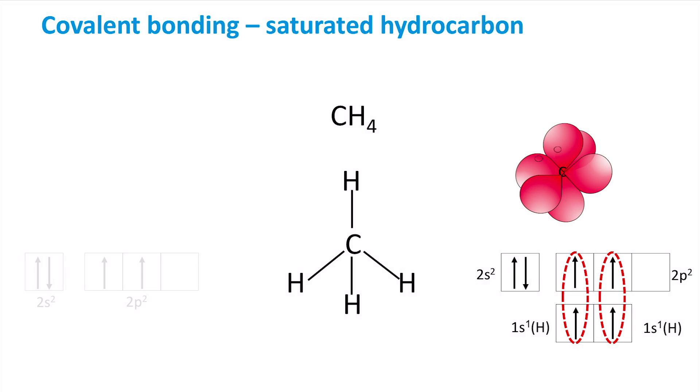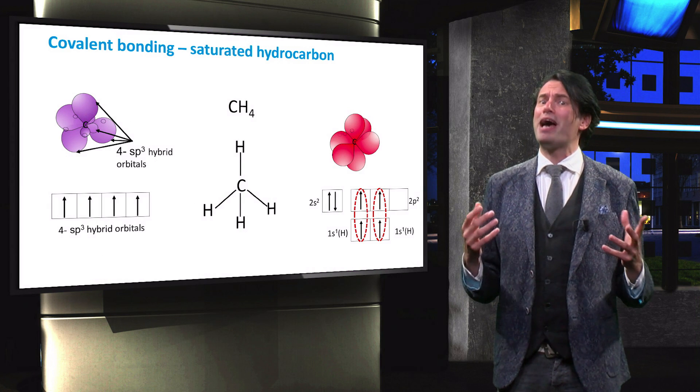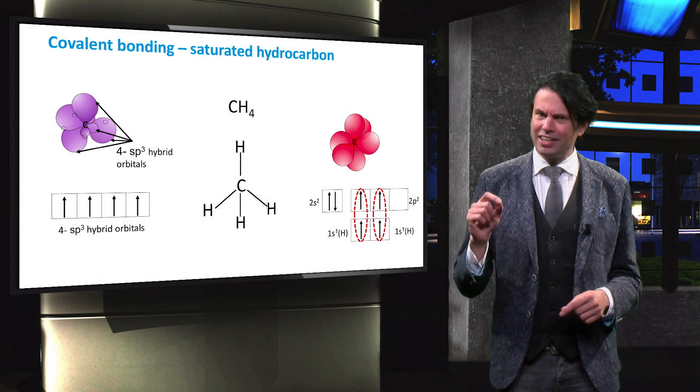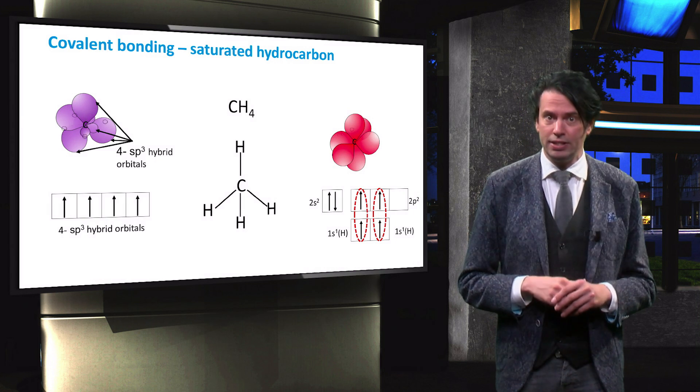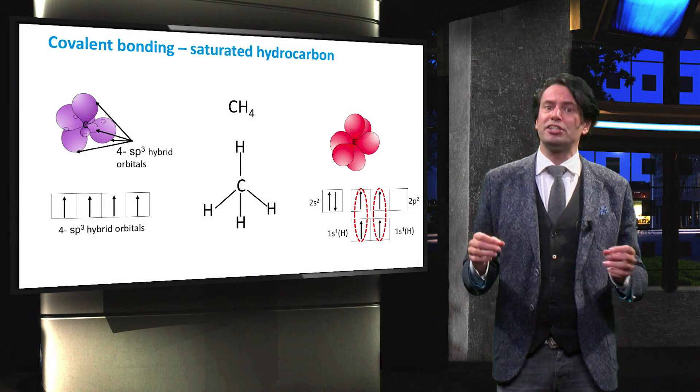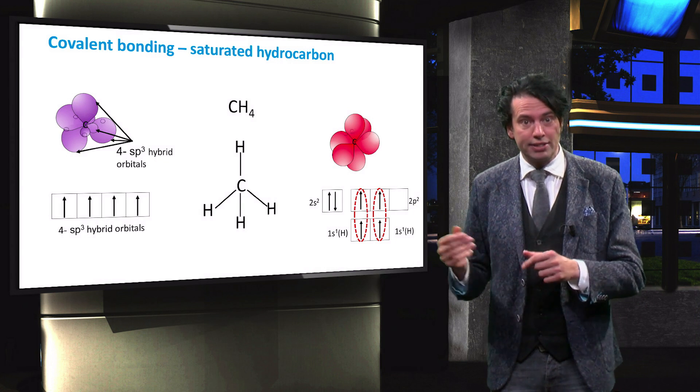This theory explains that the outer s and p shells mix with each other to form hybrid orbitals. All these hybrid orbitals have the same energy level. In this case, to maintain Hund's law of multiplicity, one of the two electrons in the 2s orbital is excited and moves into the last sp orbital.